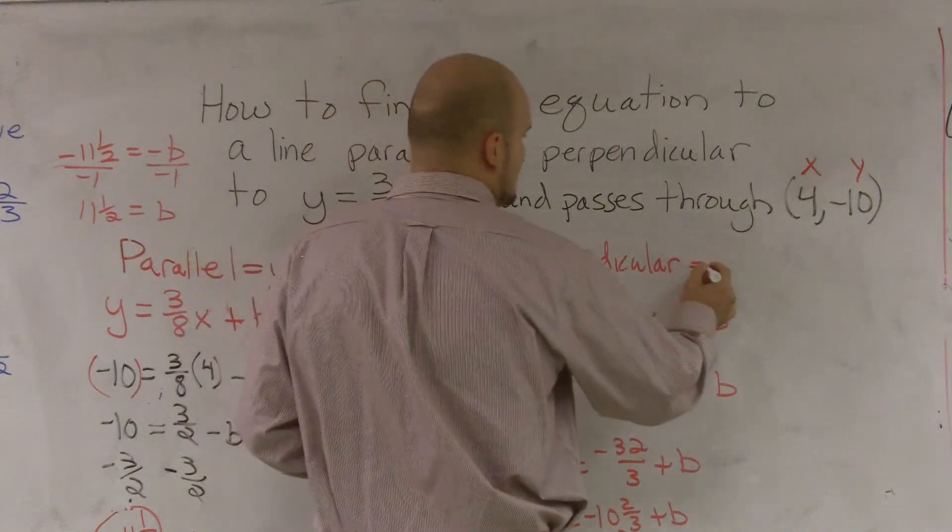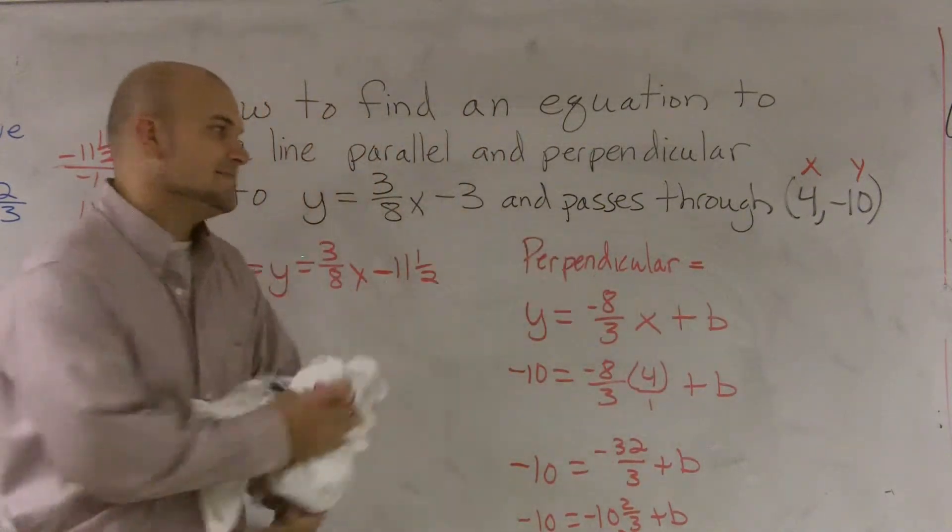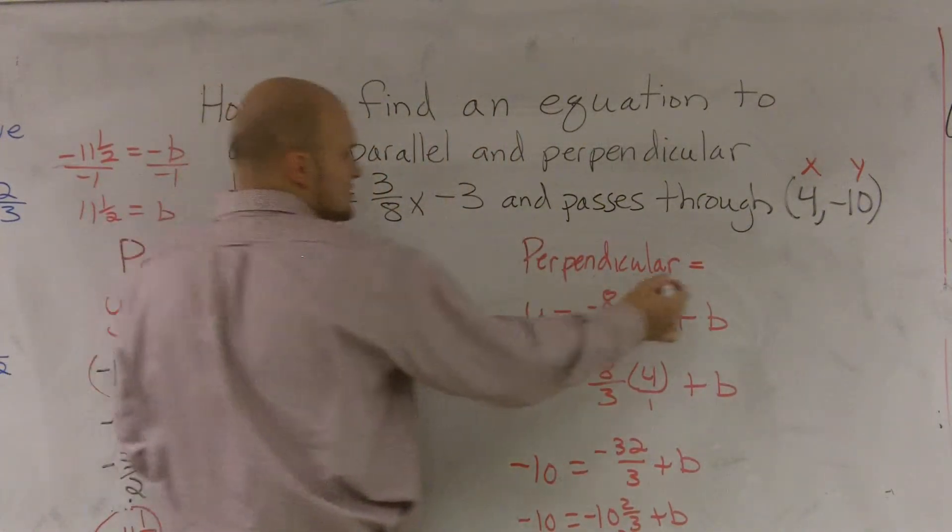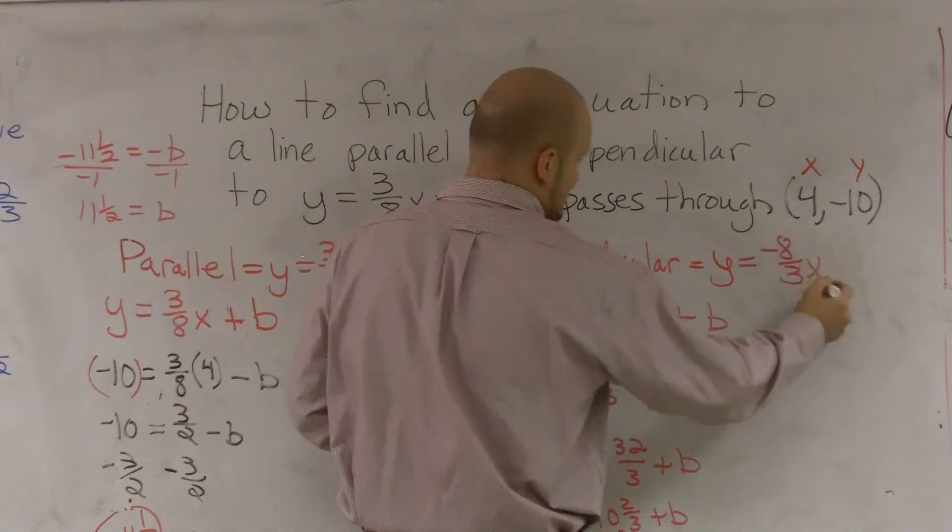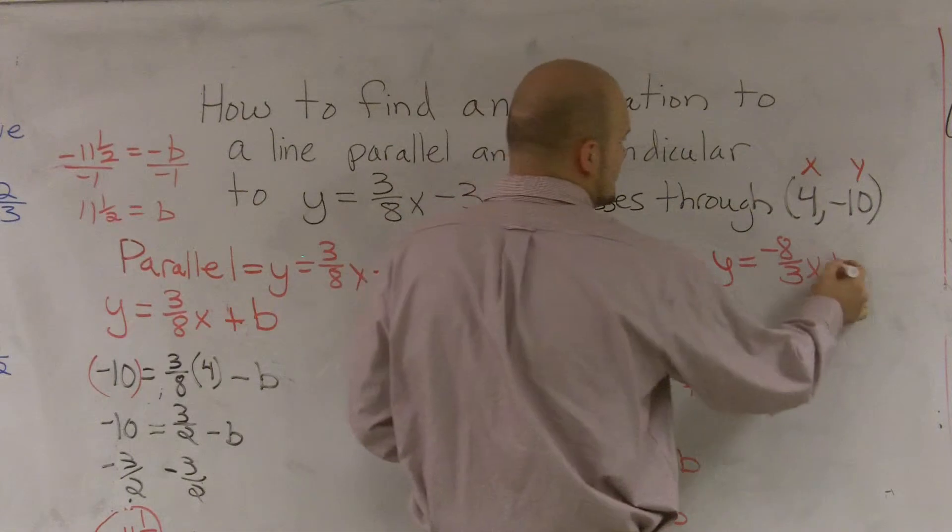So now when I rewrite my perpendicular equation, I'm rewriting the same equation, but I know I have to use my new slope. So y equals negative 8/3x plus 2/3.